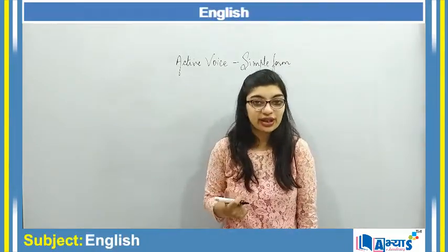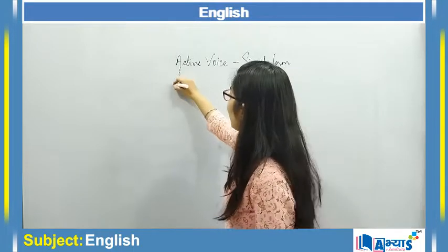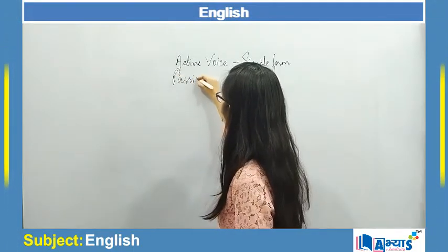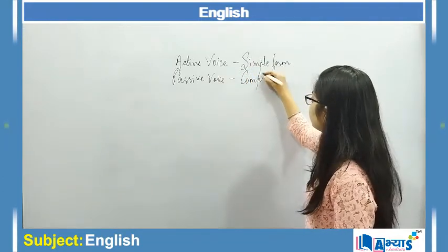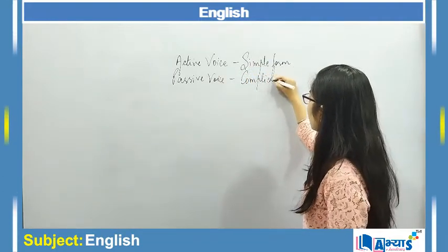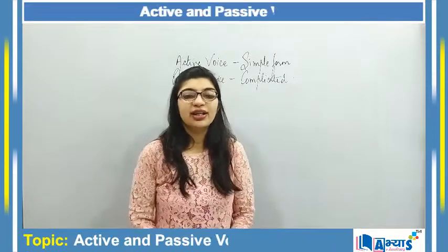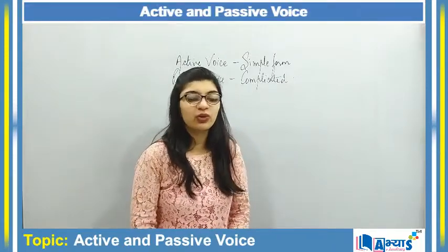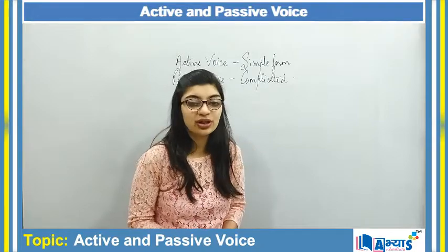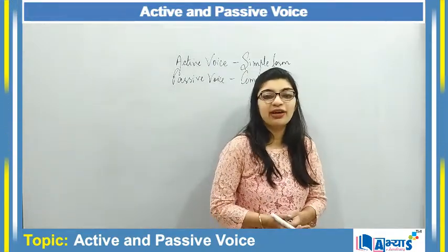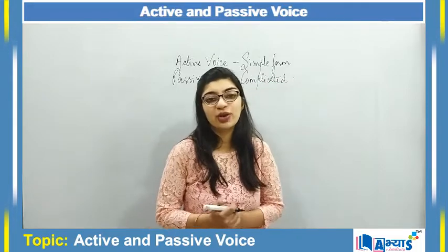Active voice and passive voice are opposites — passive voice contradicts active voice. So when a sentence is in passive voice, it becomes a little more complicated. When it is active it takes a simple form, but when it is passive, it will be a little complex in structure.